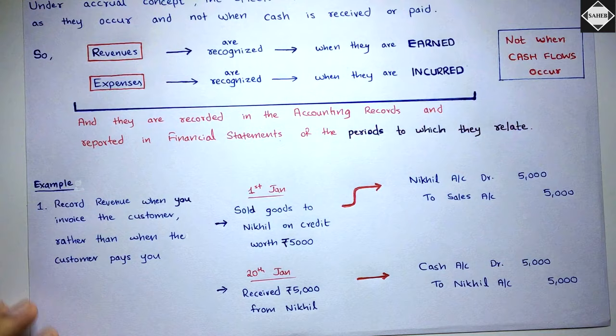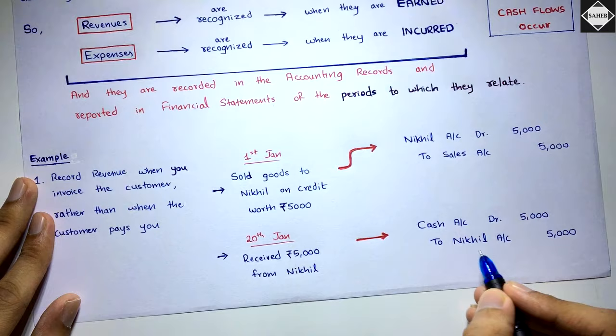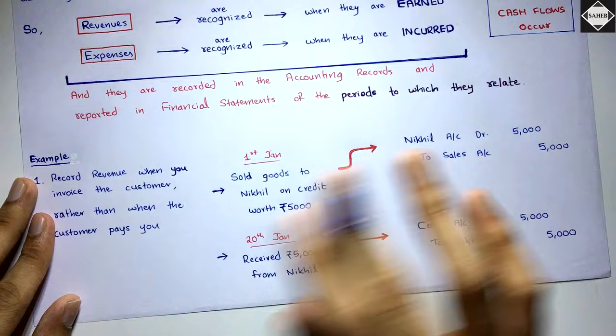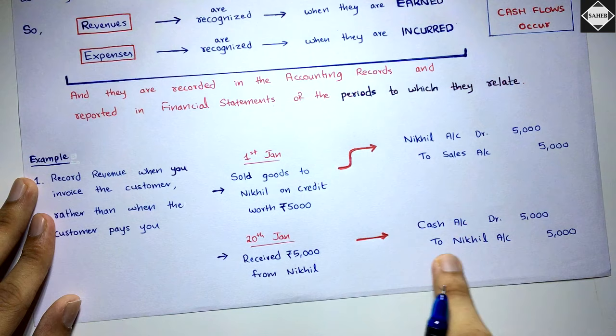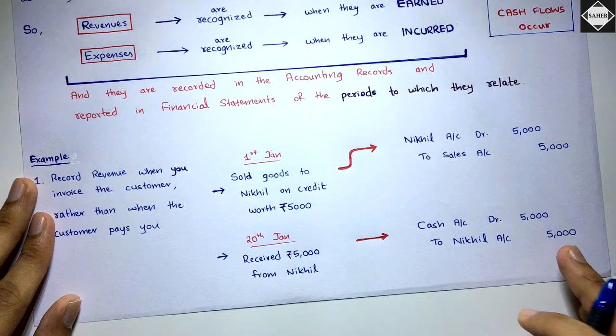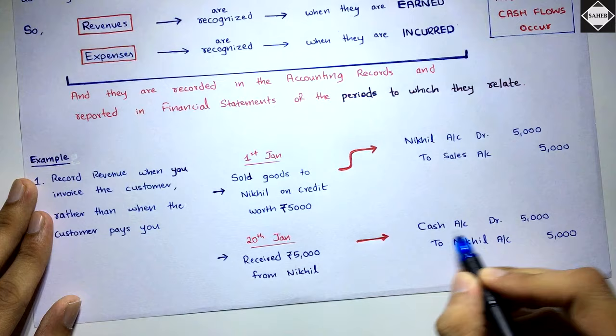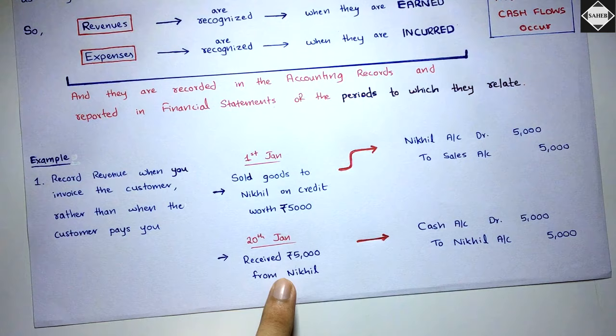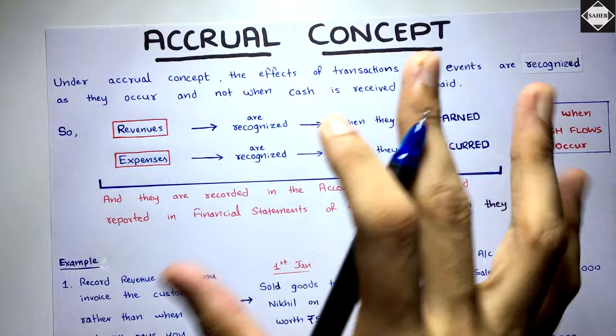When you receive the money from Mr. Nickel, you will close the Nickel account — cancel the receivables account. Since Nickel account was debited earlier, you make an equal credit to cancel it: credit to Nickel account. And you will debit the cash account because you received money — cash is increasing, so you debit it. We record the transaction as and when it occurs, not when the cash is received or paid. This is called the accrual basis of accounting.